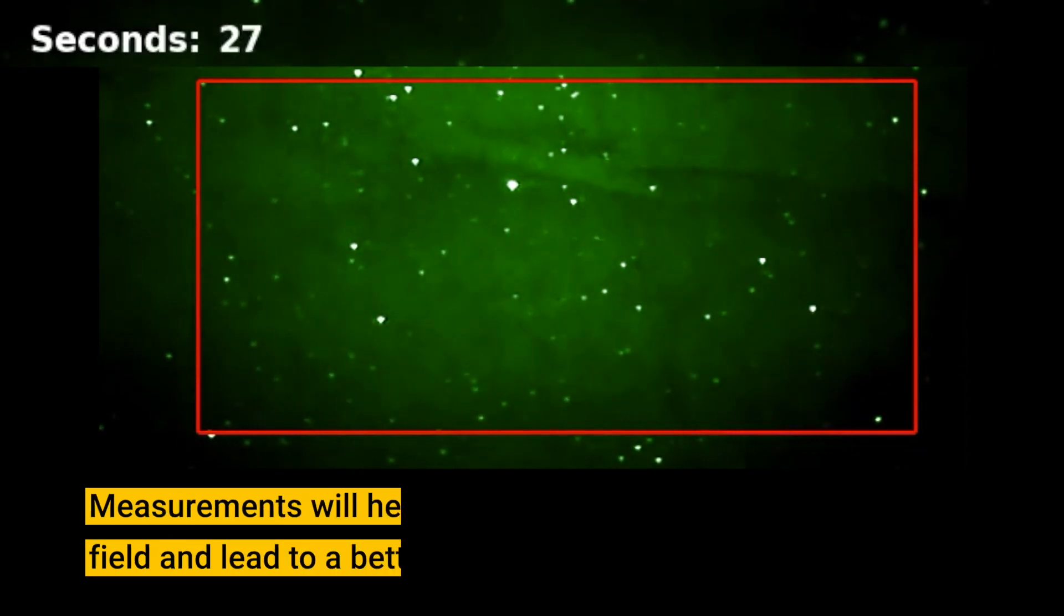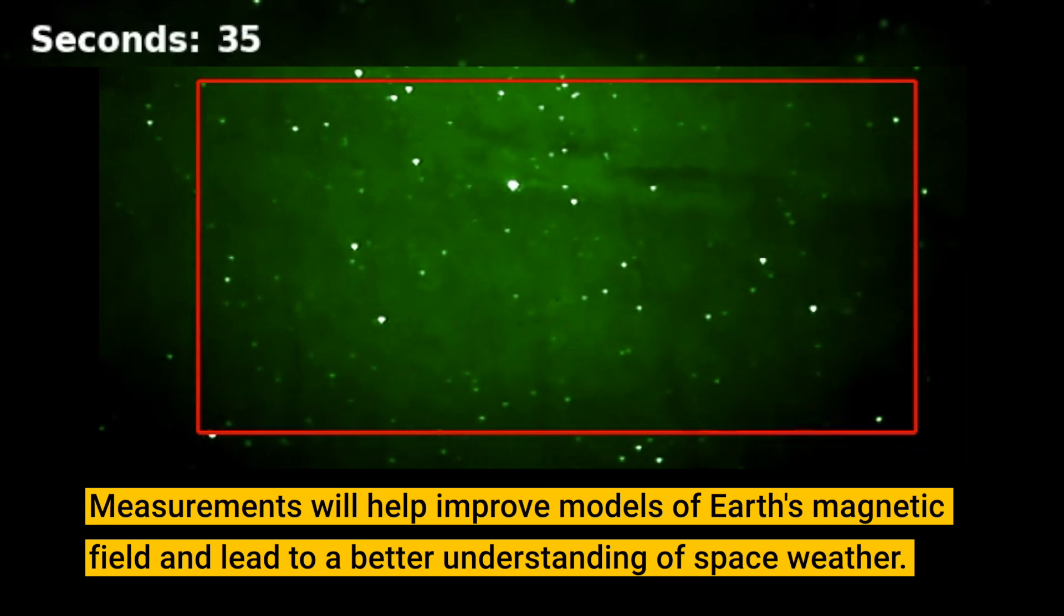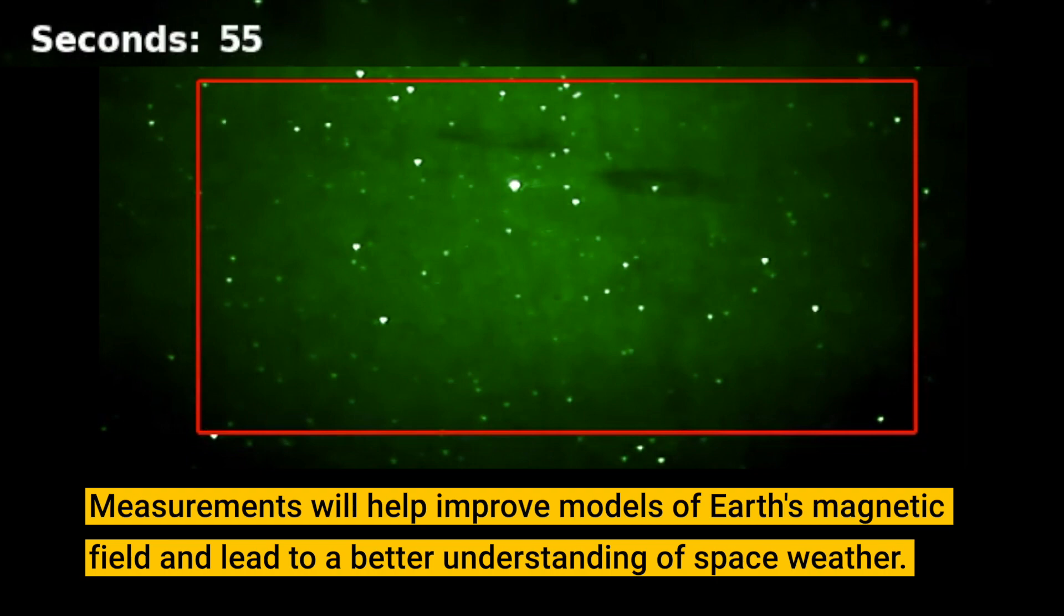And then over the course of 20 or so seconds it colors in again until the background aurora is where it was before the event happened.